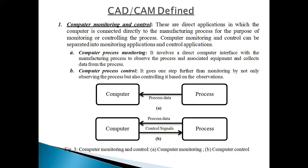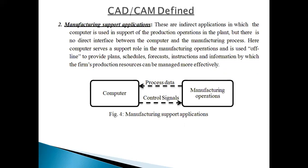Monitoring means only collecting data from the process — that is called monitoring of the system. Controlling means the computer gives a command to the machine to perform an operation — that is controlling. The second part is manufacturing support application, which are indirect applications in which the computer is used to support the production operation.